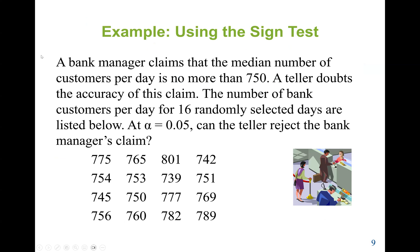Here is an example. A bank manager claims that the median number of customers per day is no more than 750. A teller doubts the accuracy of this claim. The number of bank customers per day for 16 randomly selected days are listed. At alpha = 0.05, can the teller reject the bank manager's claim? Our claim value is a median of 750.